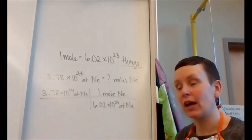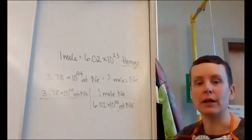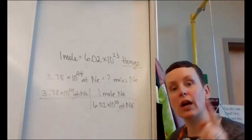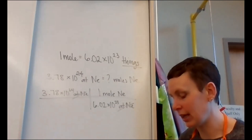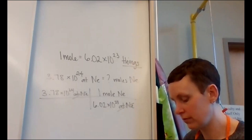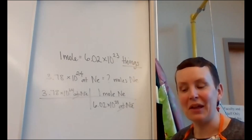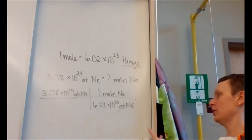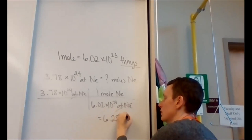Atoms cancel, and then punch it into your calculator. Try pausing the video and solving it yourself first. For three significant figures, you should get 6.28 moles of neon.